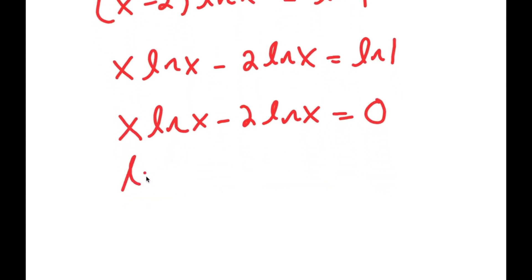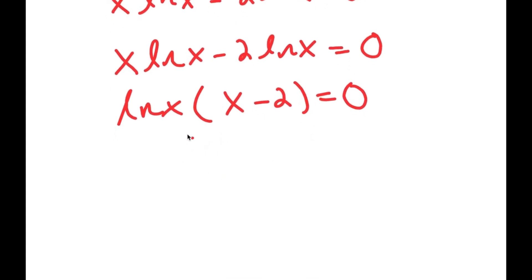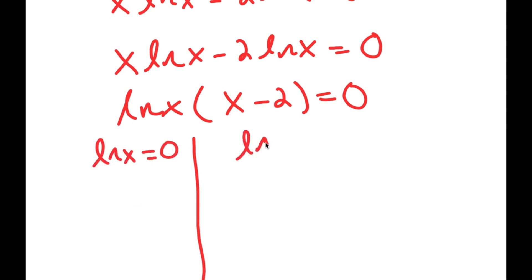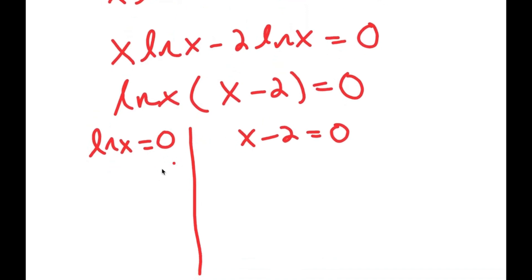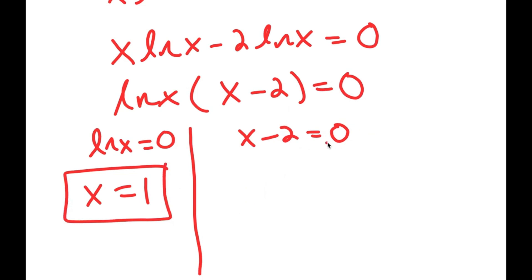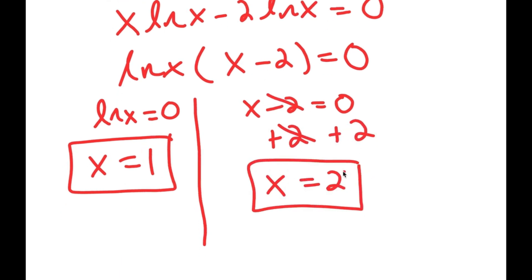I'm going to factor out ln(x), so I get ln(x) times (x minus 2) is equal to 0. This gives me two equations: ln(x) equals 0, and x minus 2 equals 0. For ln(x) equals 0, we know that ln(1) is 0, so x equals 1. For x minus 2 equals 0, I add 2 to both sides and get x equals 2. So x equals 1 and x equals 2 are my solutions.